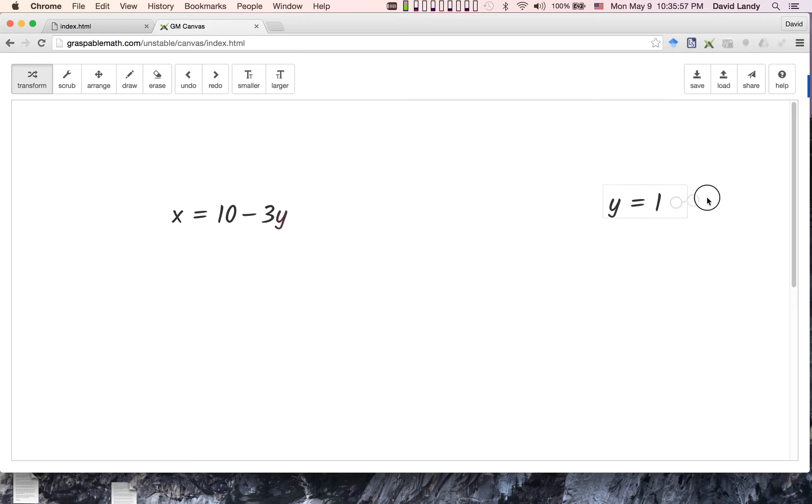And you can see there, in that amount of time, that's how long it took me to solve for y. Of course, I've got to go back now and figure out what x is. So y is 1, x is 7.